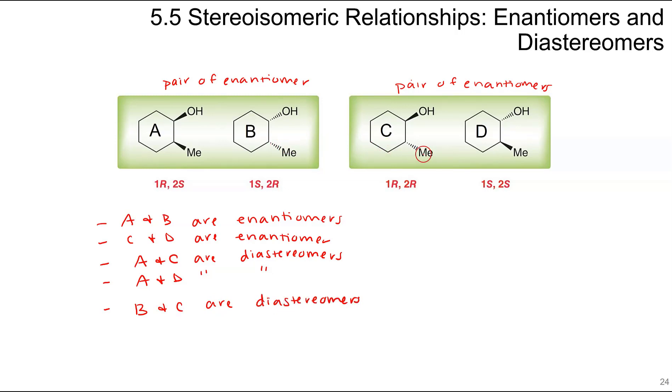B and C are diastereomers. In both cases, the methyl is dashed and the OHs are different, so they're not mirror images of each other, they are diastereomers. And then B and D are diastereomers.